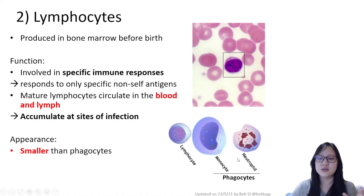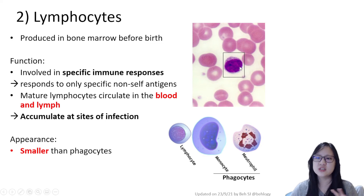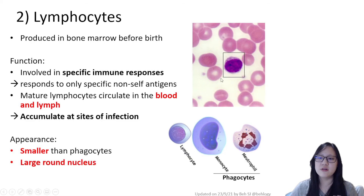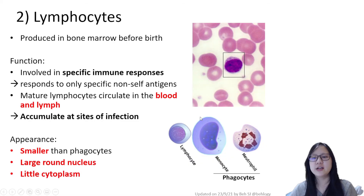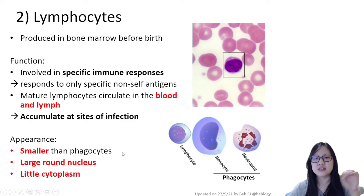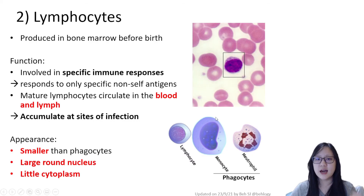The appearance of lymphocytes is different from monocytes and neutrophils. They are much smaller — just slightly bigger than a red blood cell. They have a large round nucleus that takes up almost all the space, with only very little cytoplasm visible. This is how you can differentiate lymphocytes from monocytes and neutrophils under the light microscope.